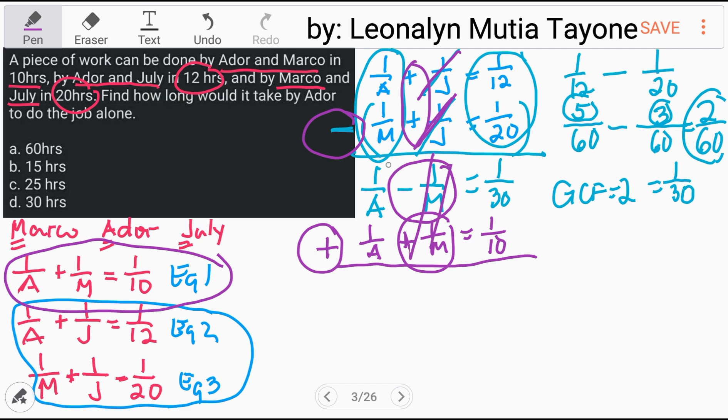Now, what remains is 1/A + 1/A. Let's do this step by step: 1/A + 1/A—same denominator, just copy A. The numerator: 1 plus 1 equals 2. So therefore, the answer here is 2/A.